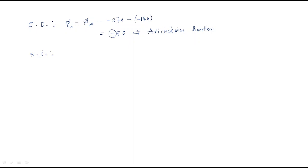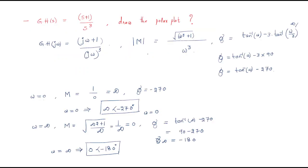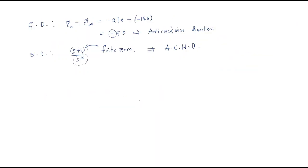The starting direction is decided by which point is nearer to the origin. The given system is (s+1)/s³. Ignoring s⁰, we have a finite zero at s=0. Since the zero is nearer to the origin, the starting direction is also anticlockwise.